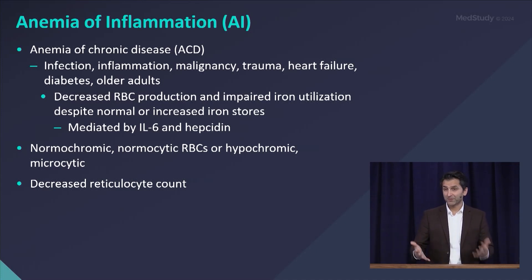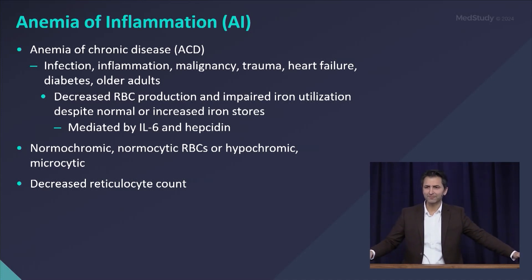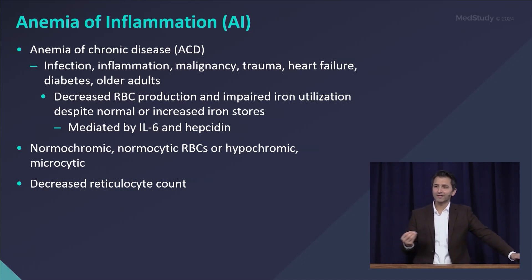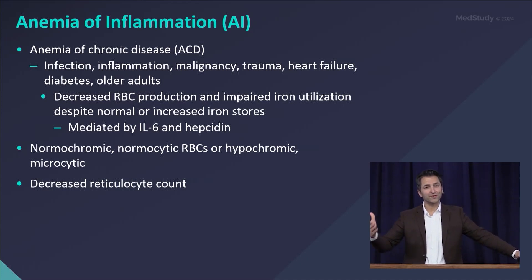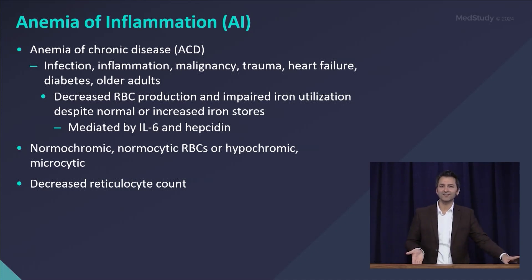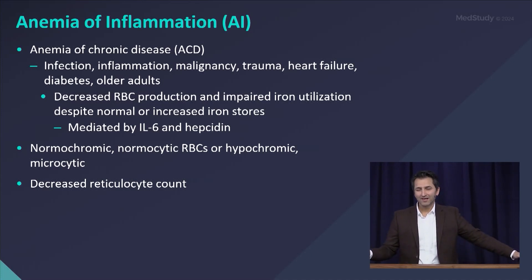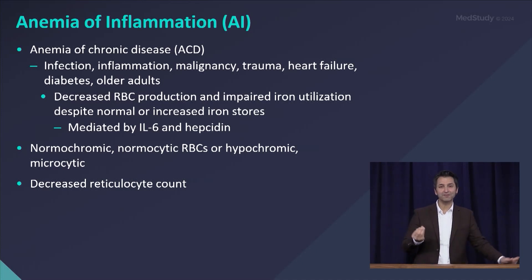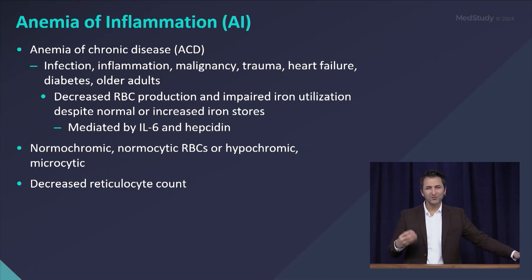Think about anemia of inflammation in patients with some sort of chronic health condition: chronic infection like osteomyelitis, inflammatory conditions like systemic lupus, cancer, heart failure, and so on. Chronic inflammation is associated with increased production of interleukin-6, an inflammatory cytokine. IL-6 upregulates hepcidin, and too much hepcidin leads to impaired iron utilization — so in anemia of inflammation, you have iron, you just aren't using it properly.